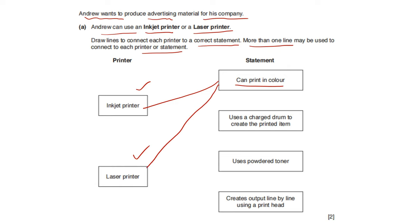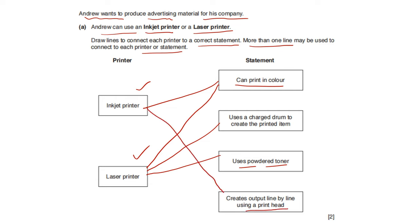Uses a charged drum to create the printed item — that is the laser printer. Uses powder toner — that is also the laser printer. Creates output line by line using a print head — that is the inkjet printer.